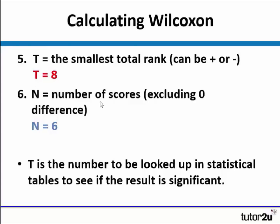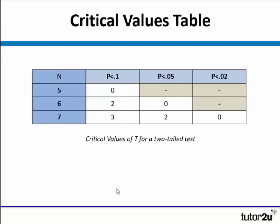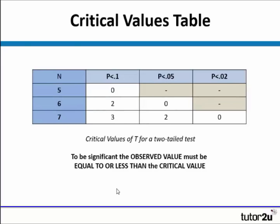We then use the number of scores, excluding any that had no difference. In this example we didn't have any scores with no difference, so that's fine. These two pieces of information — T and the number of scores — are what we use to look up in the statistical tables to see if our result is significant. We're going to be looking at a two-tailed test, and to be significant, our observed value must be equal to or less than the critical value.